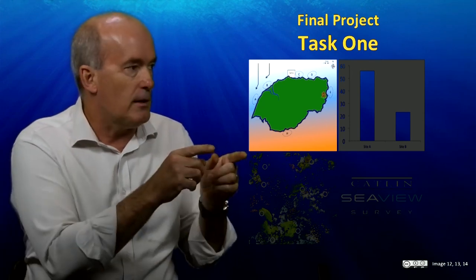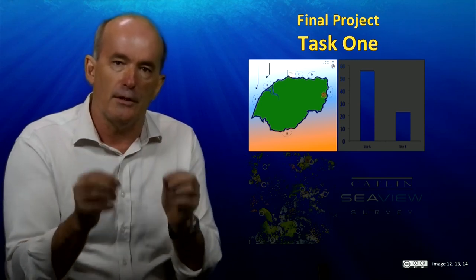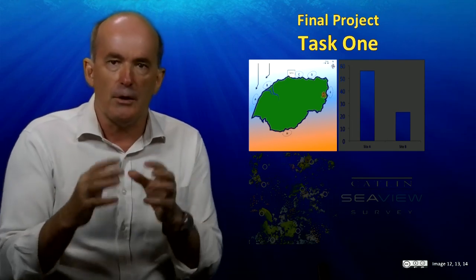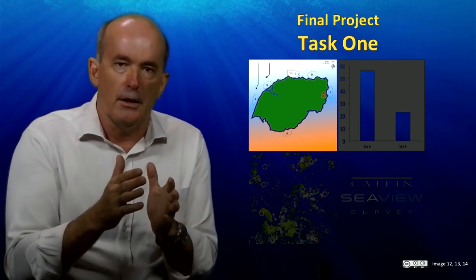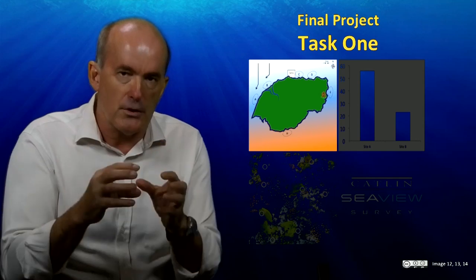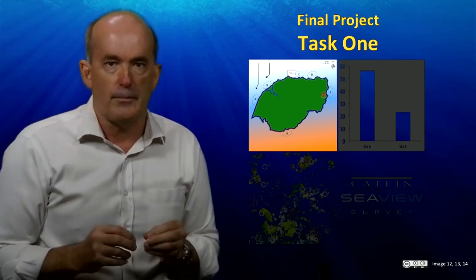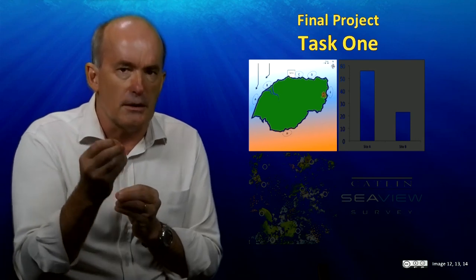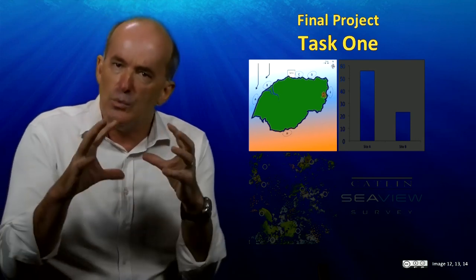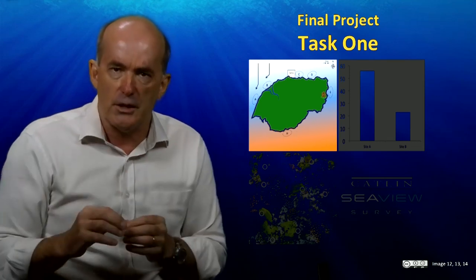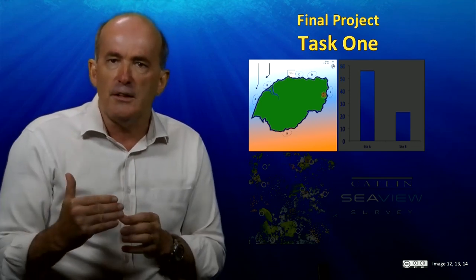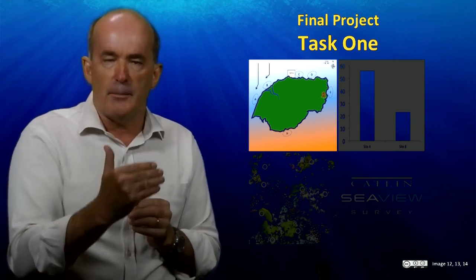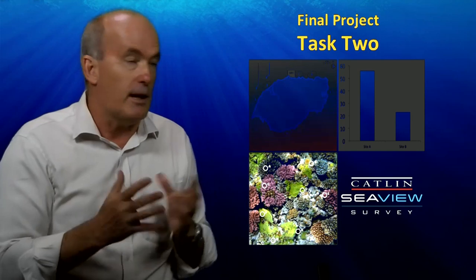When you start Task 1, you'll be presented with a briefing document which will give you all the information you need to begin designing your survey program. You will be told what your objective is and you will then be given a map, just like the one shown here, which you'll use to select your survey sites. Step-by-step instructions will guide you through what you need to do — make sure you read all of these instructions carefully. You will be assessed on your ability to design the best survey program possible.